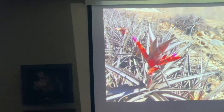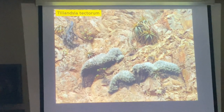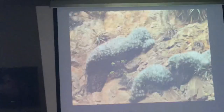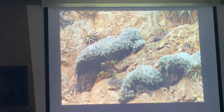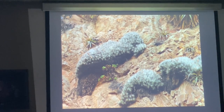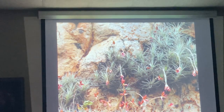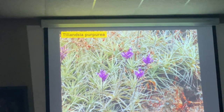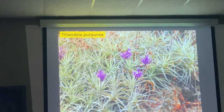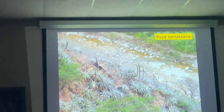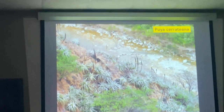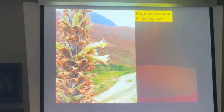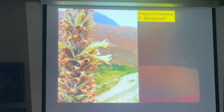Going inland — again Tillandsia latifolia, a little different with more red bracts. A different form of Tillandsia tectorum, much more compact than the one we saw before with very long thin leaves. Tillandsia purpurea growing in rocks instead of sand. And another Puya — Puya berteroniana.